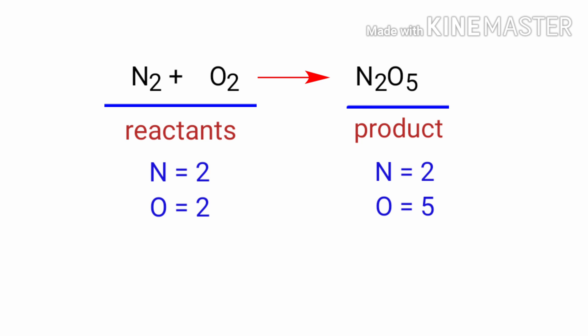To balance the chemical equation, we need to make use of coefficients. A coefficient is a number that we place in front of a chemical formula.